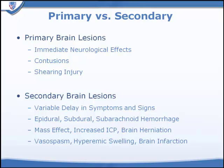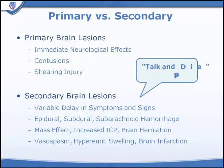Secondary brain lesions, which are usually visible on CT, have a variable delay between the TBI and the signs and symptoms. These include expanding hematomas in the epidural space, the subdural space, and the parenchyma of the brain, and they may damage the brain secondarily by causing mass effect, increased intracranial pressure, and brain herniation. In addition, patients may have problems with vasoreactivity including vasospasm and hyperactivity, leading to secondary brain infarction. These secondary lesion patients are classically awake or wandering confused at the accident scene before experiencing delayed neurologic sequelae.